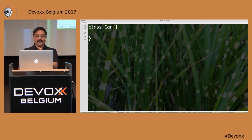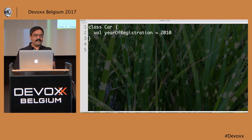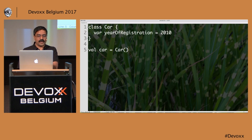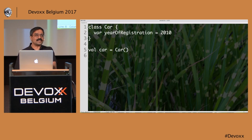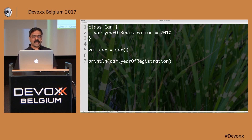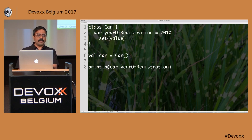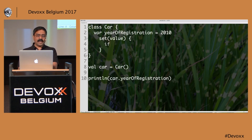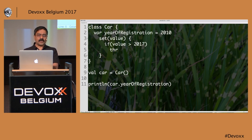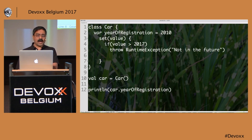Here's a class car with a property yearOfRegistration = 2010. To create an object, I say 'car = Car()' — there's no 'new' keyword in Kotlin. You treat classes like functions to create objects. I print car.yearOfRegistration and can pull in the property. If I want to do some checking in a setter, I can write a set(value) function, throw a RuntimeException if value > 2017, otherwise set field = value.